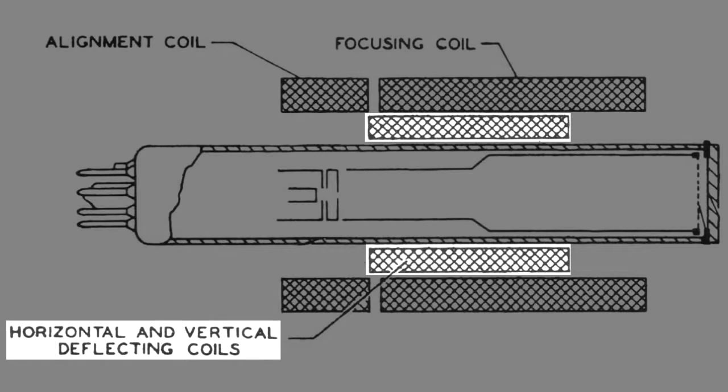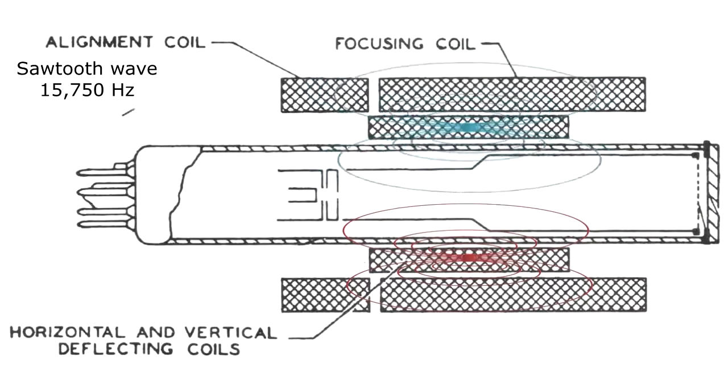The coils of wire were energized with a particular pattern of voltage, though. A sawtooth wave. To achieve horizontal scanning, one set of coils was energized with a sawtooth wave with a frequency of 15,750 hertz. That moved the beam left to right gradually across the screen in about 63 millionths of a second, followed by a quick snap back to the left of the screen to scan the next line.